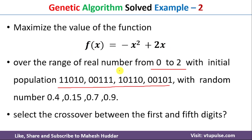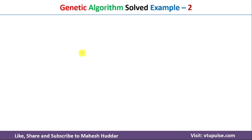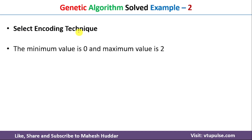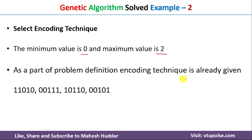The first step in a genetic algorithm is to select the best encoding technique for each possible solution. The minimum value is 0 and the maximum is 2. Since the problem already gives us four chromosomes in the initial population — each containing five binary digits (0 or 1) — there is no need to encode the solution ourselves. If it were not given, we would need to find a way to encode the solution. I have already solved a problem discussing how to encode a solution into a chromosome; the link is in the description.